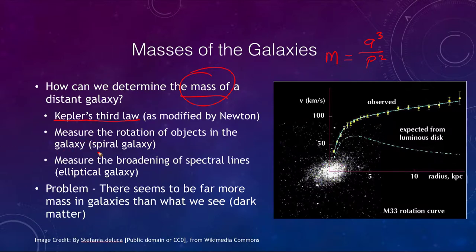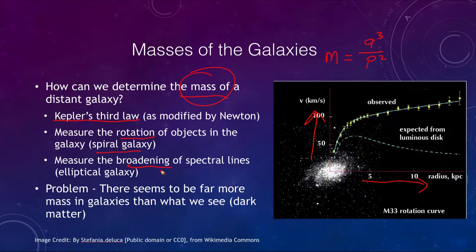Another way is for spiral galaxies: we can look at the rotation of objects and examine velocities as a function of distance, and that tells us about the mass as well. We can also look at the broadening of spectral lines, because elliptical galaxies don't have a disk with the same type of regular rotation that a spiral galaxy has. We can't look at their rotation, but we can look at the broadening of spectral lines to help determine the mass of an elliptical galaxy. What we find in each case is a problem: there seems to be far more mass in galaxies than we see.